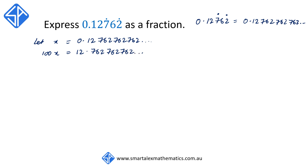Our next equation, we're going to multiply x by 100,000. This means that the decimal point moves five places to the right, so that we get 100,000x = 12,762.762762762...